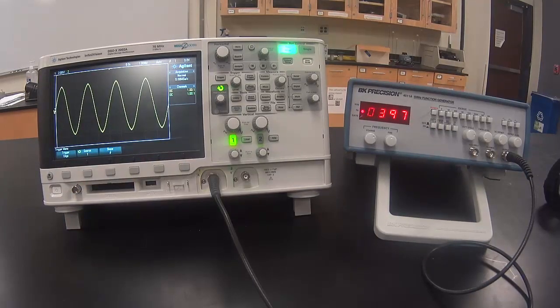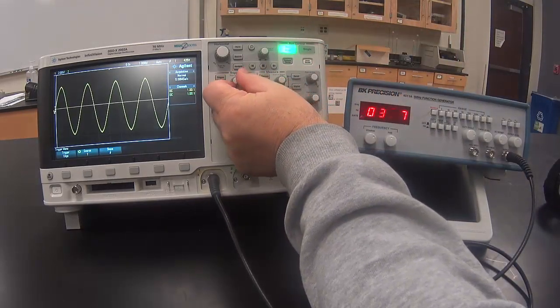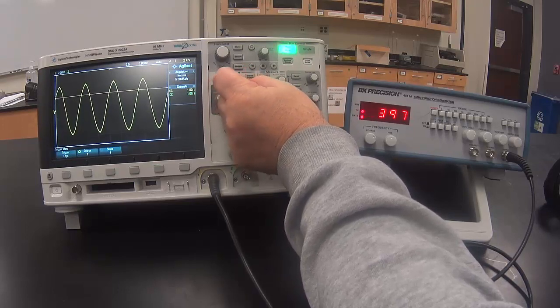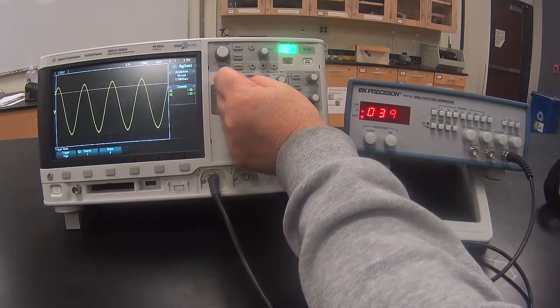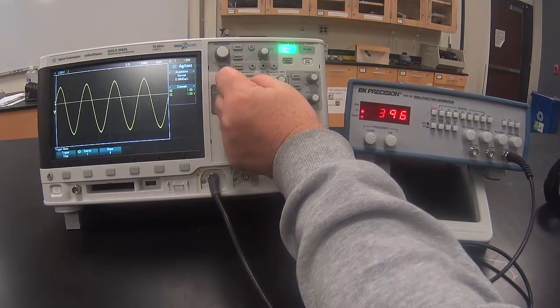The trigger tells the oscilloscope when to start drawing. It always wants to start drawing the signal at the same place so that it draws over itself and looks stable on the screen.